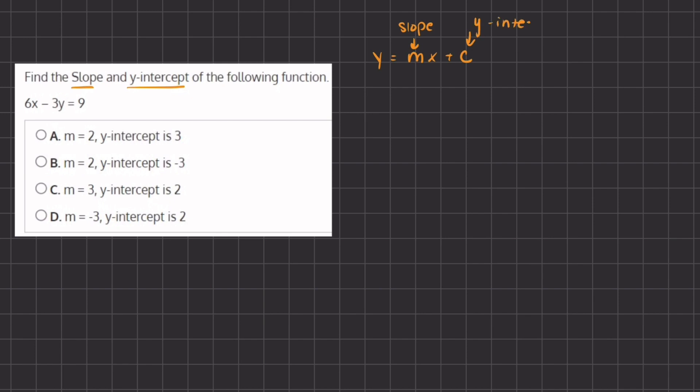Our first step in putting this function into point-slope form is going to be to isolate this y. In order to do so, we are going to subtract the 6x on both sides, and so on the left-hand side we have -3y = -6x + 9.